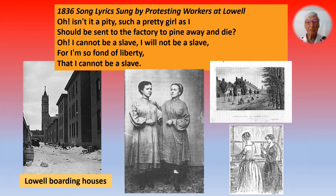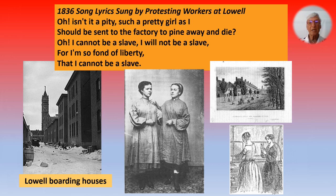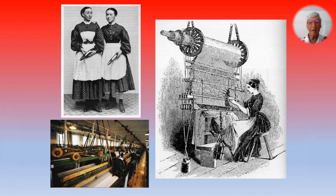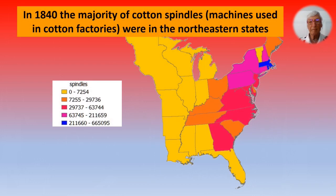Here's an 1836 song lyric sung by protesting workers at Lowell: 'Oh, isn't it a pity such a pretty girl as I should be sent to the factory to pine away and die. Oh, I cannot be a slave. I will not be a slave, for I am so fond of liberty that I cannot be a slave.' But she was — they were slaves, white slaves who lived pretty miserable lives without much future. Death came at a younger age in those days. By 1840, the majority of cotton spindles — the machines used in cotton factories — were in the northeastern states.